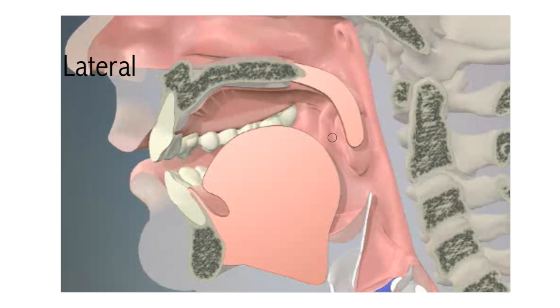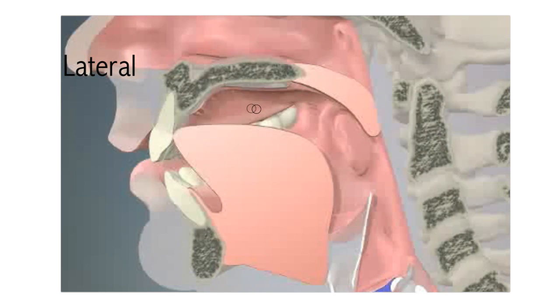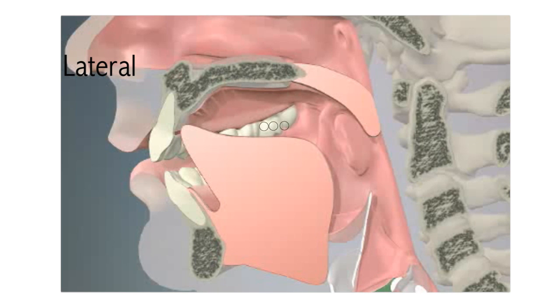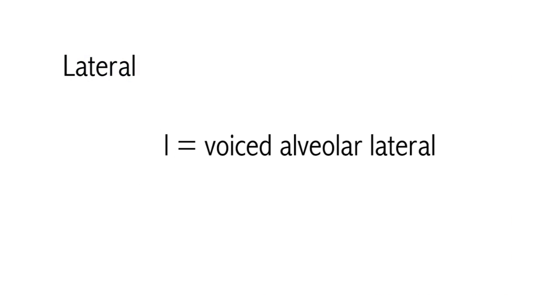Lateral. A lateral consonant is made by making a blockage in the centre of the mouth but pushing the sides of the tongue downwards so that the air can escape along the sides. Try saying T, L, T, L and feel what is happening in your mouth. Both sounds are made by bringing the tip or blade of the tongue into contact with the alveolar ridge in roughly the same place. But for T you block the air completely, whereas for L the sides of the tongue are pushed slightly downwards and the air is able to escape in a continuous stream. L is a voiced alveolar lateral. There are no other laterals in English.